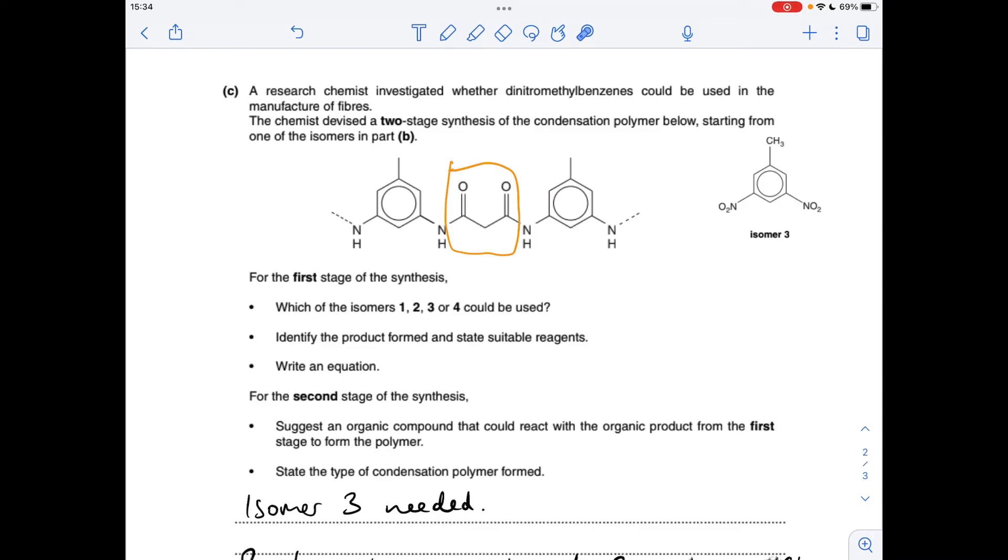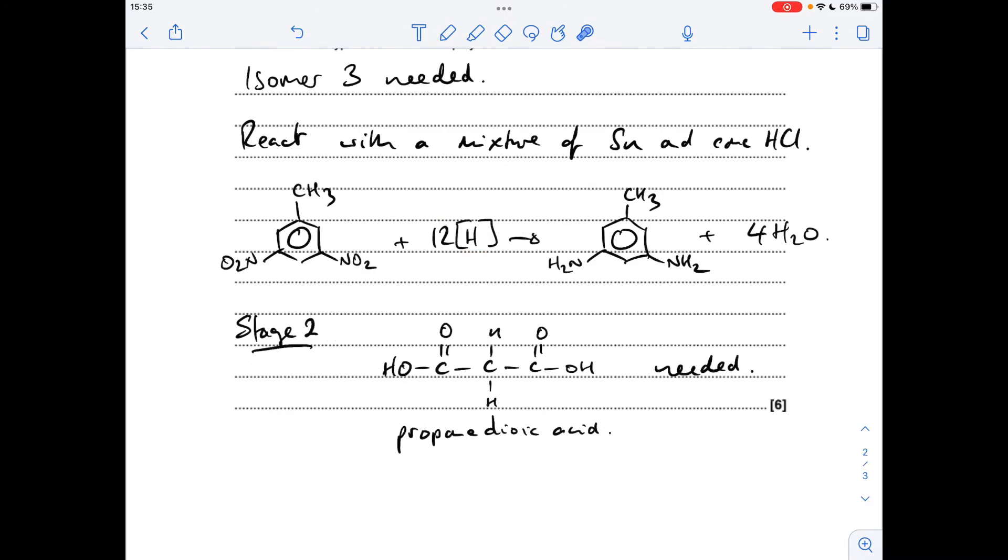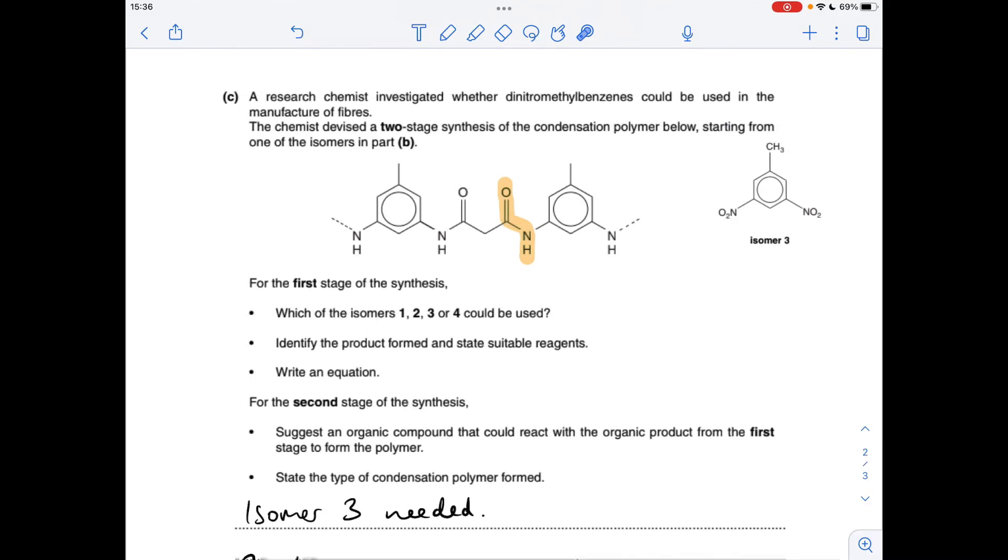An organic compound that could react with the diamine of isomer 3 is going to need to have this feature. This just needs to be a dicarboxylic acid. If you have a COOH group here and here, that would generate that polymer. We're talking about this dicarboxylic acid here, which is called propanedioic acid.